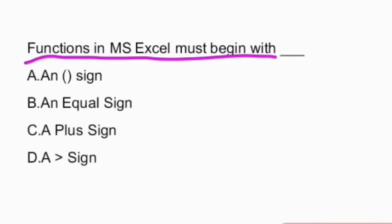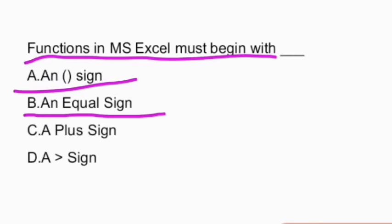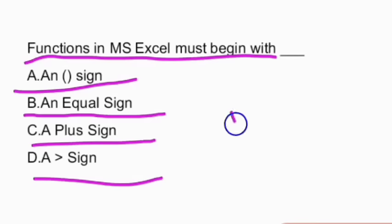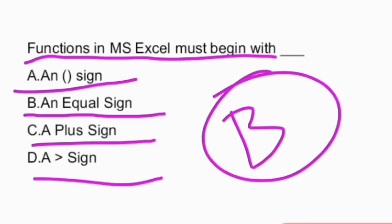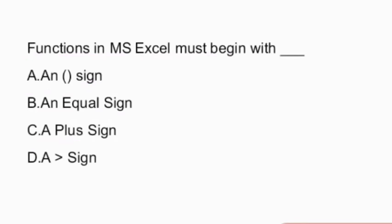Next question: functions in MS Excel must begin with — an and-bracket sign, equal sign, plus sign, or greater than sign? The answer is option B — functions must start with an equal sign.